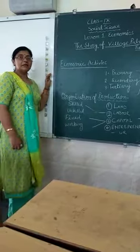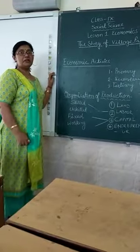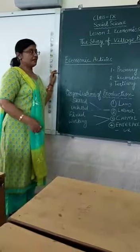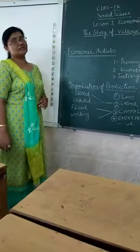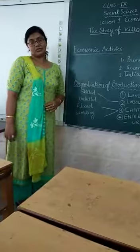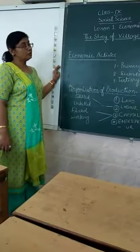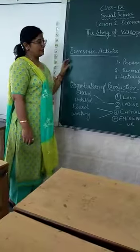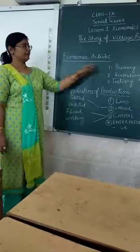Primary activities are those which are directly interconnected with nature. When we directly interconnect with nature and earn money, those types of activities are known as primary activities. For example, farming, fishing, wood cutting — these are primary activities. Then secondary activities.